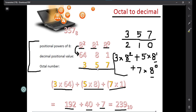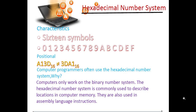Now let's move forward to the hexadecimal number system. Hexadecimal is comprised of two words: hexa and decimal. Hexa means 6 and deca means 10, so 6 + 10 = 16. In this number system we will have 16 symbols.